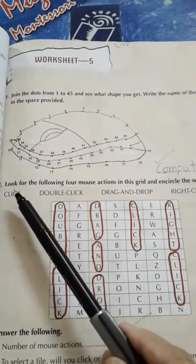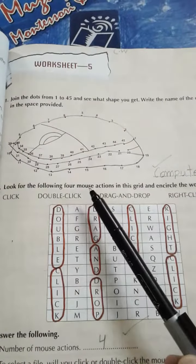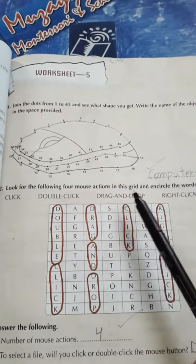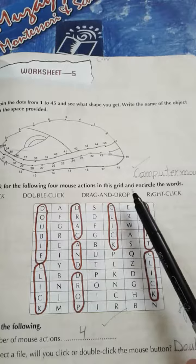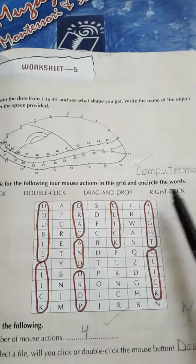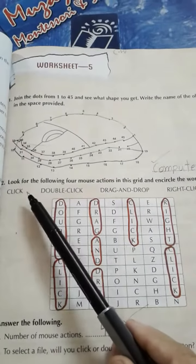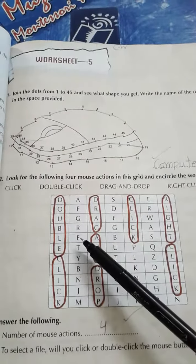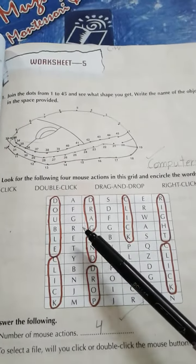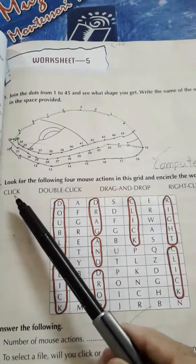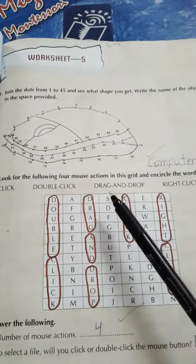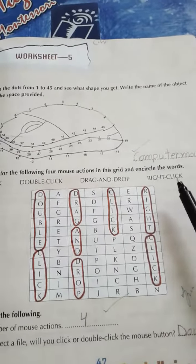Question number 2: Look for the following 4 mouse actions in this grid and encircle the words. You have to find these 4 actions here and circle them: click, double click, drag and drop, and right click.